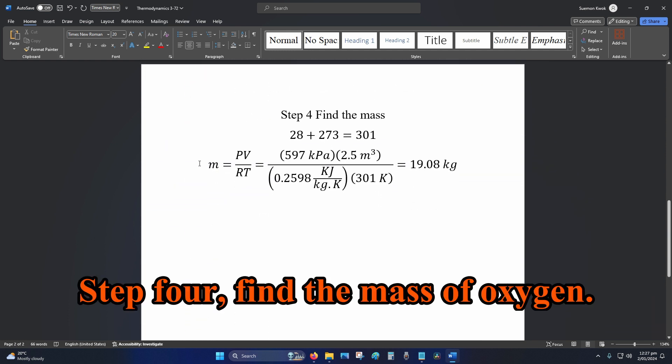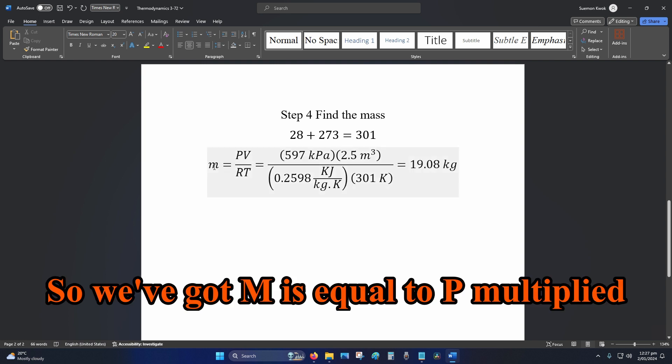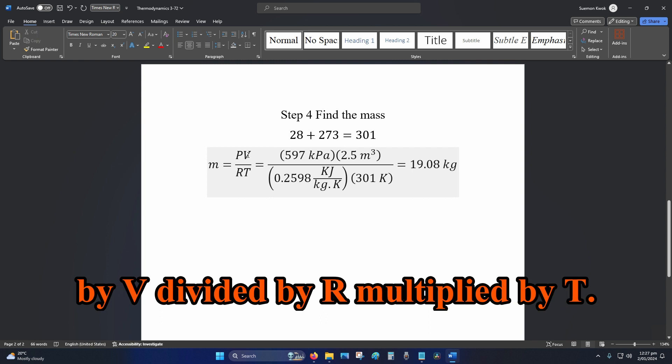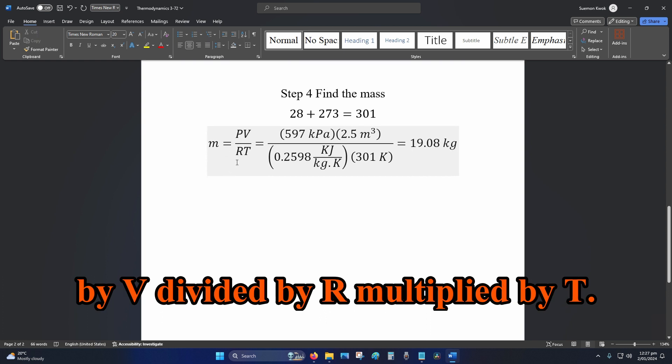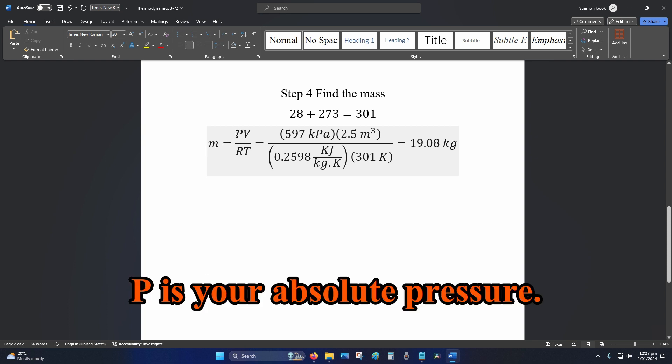Step 4: Find the mass of oxygen. So we've got m is equal to P multiplied by V divided by R multiplied by T. So m is your mass, P is your total pressure.